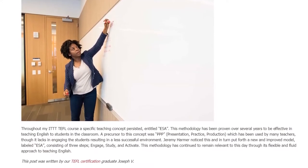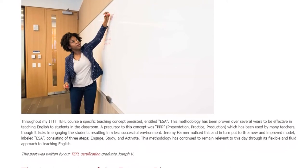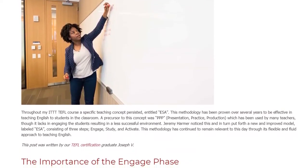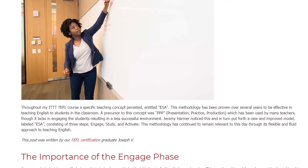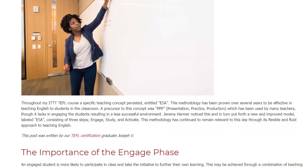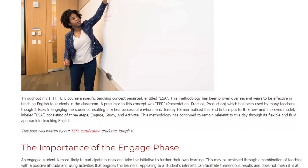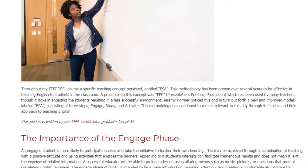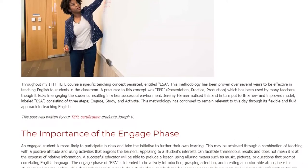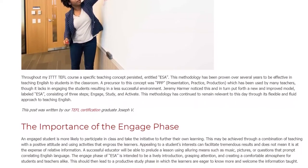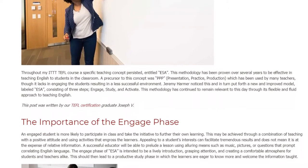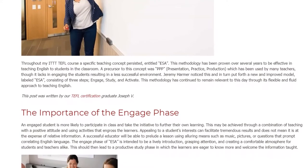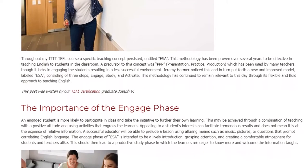A precursor to this concept was PPP — presentation, practice, production — which has been used by many teachers, though it lacks in engaging the students, resulting in a less successful environment. Jeremy Harmer noticed this and in turn put forth a new and improved model labeled ESA, consisting of three steps: engage, study, and activate. This methodology has continued to remain relevant to this date through its flexible and fluid approach to teaching English.